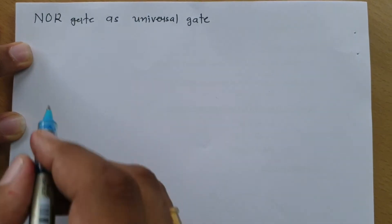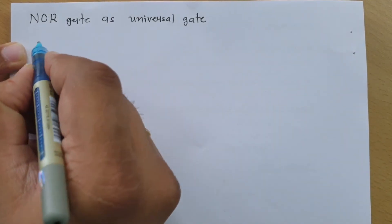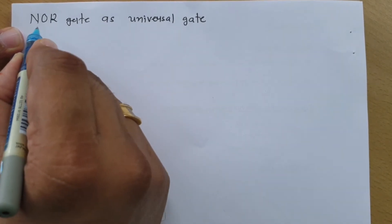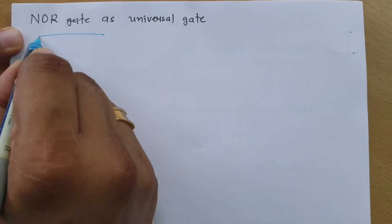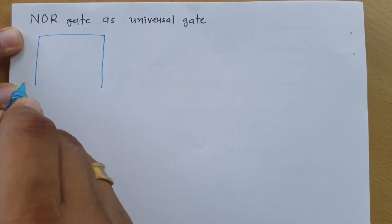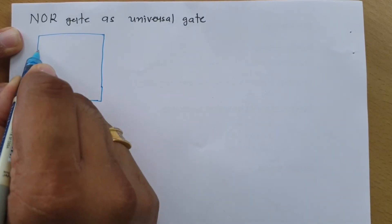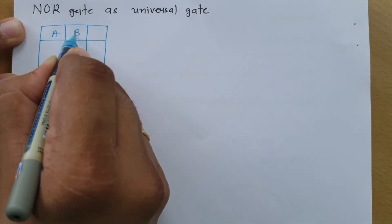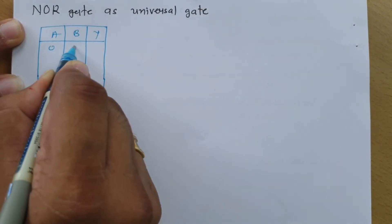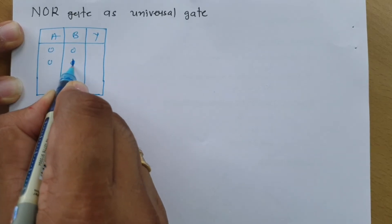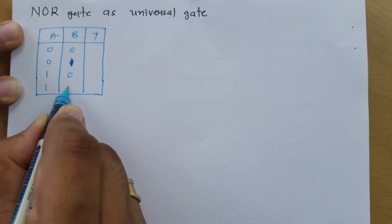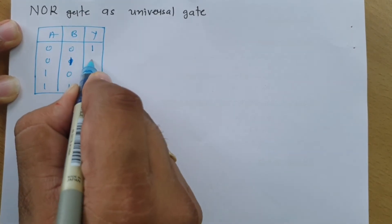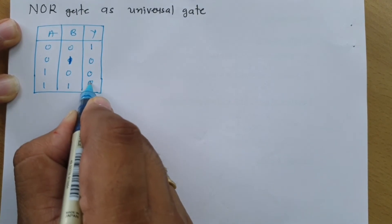Before I explain all those things, we should know the truth table of NOR gate. I have made a separate session for NOR gate where you can understand how this truth table is derived. So I'm writing the truth table for a two-terminal NOR gate, where inputs are A and B and output is Y. There are four possibilities: 00, 01, 10, and 11. The NOR gate outputs are 1, 0, 0, 0 respectively.